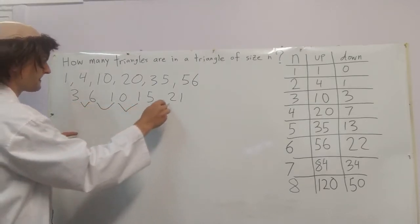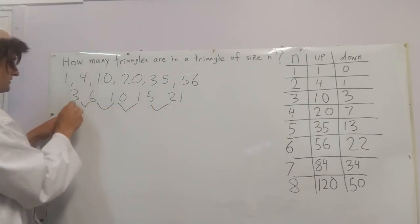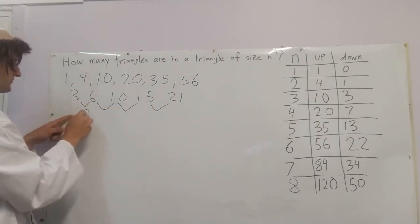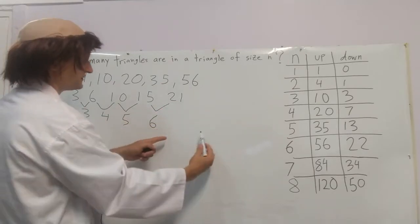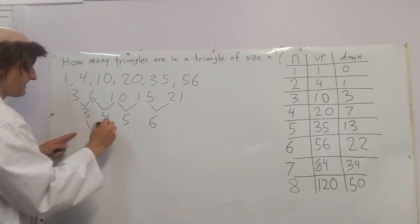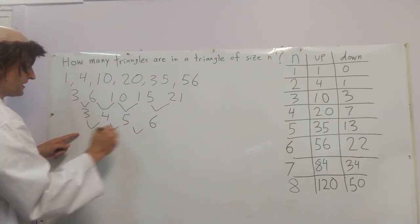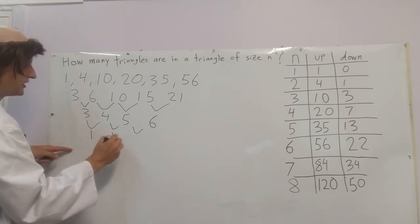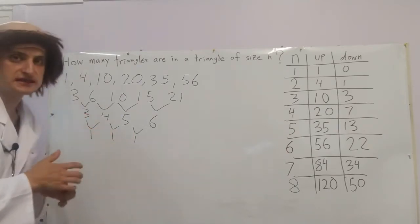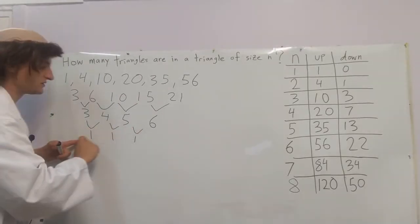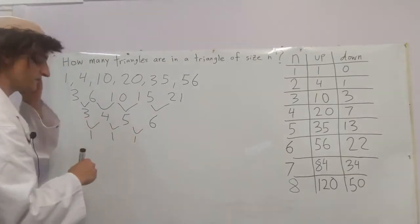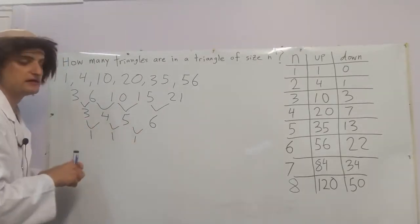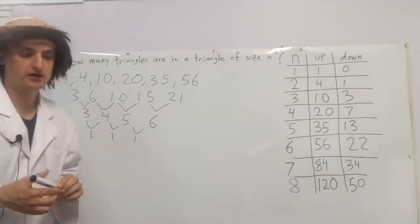Taking differences again, we get 3, 4, 5, 6 — and if we continue, 7, 8. At the next level the difference is 1, 1, 1 — it's constant. Because this constant appears at the third level, this is a third-degree polynomial.